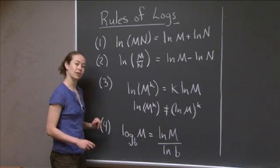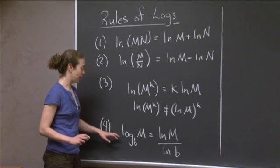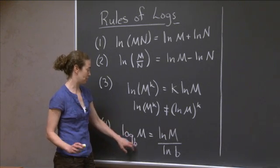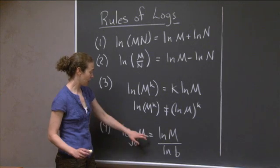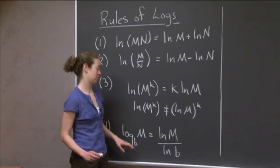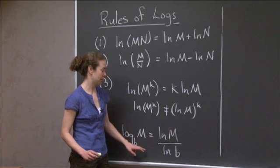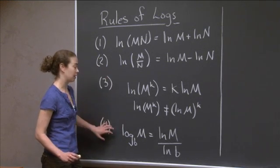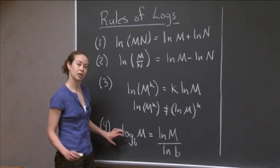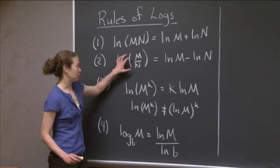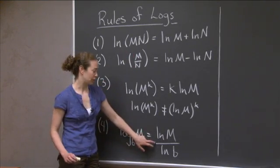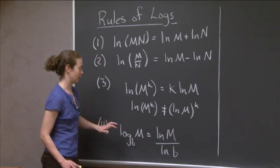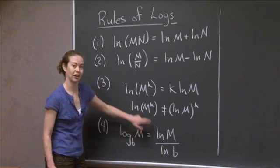The fourth rule is a change of base formula. If I have log base b of m and I want to change the base, I can rewrite that in base e as natural log of m divided by natural log of b. A common mistake is confusing the second and the fourth rules because they both have quotients. But the second is the natural log of a quotient, while the fourth is the quotient of natural logs — a distinct difference, and these two statements are not the same.